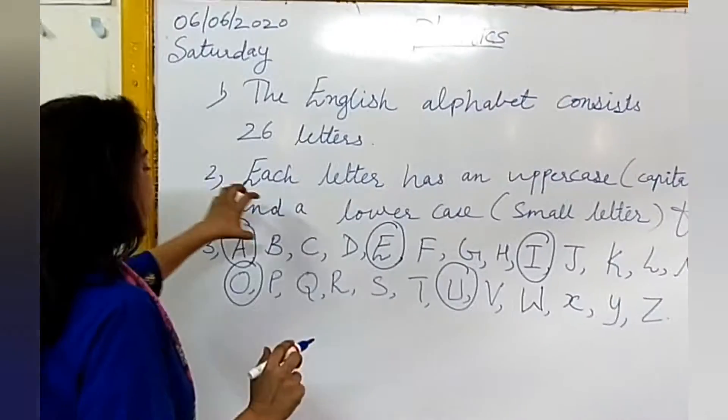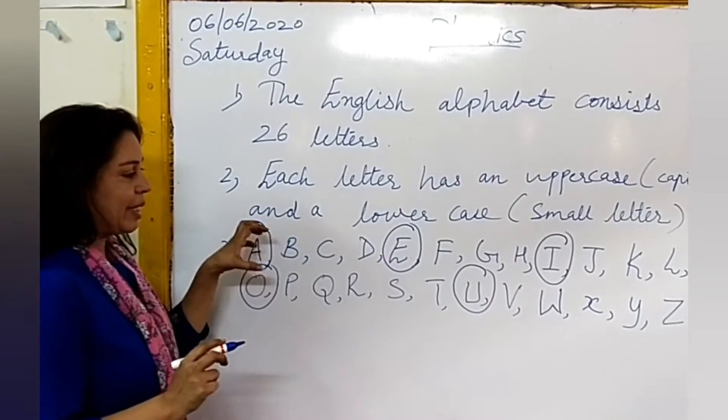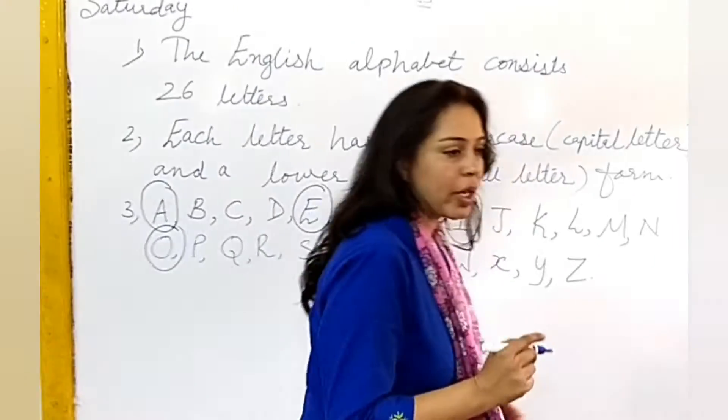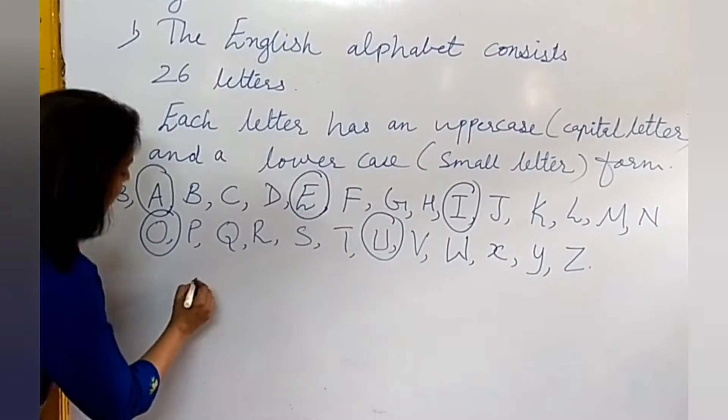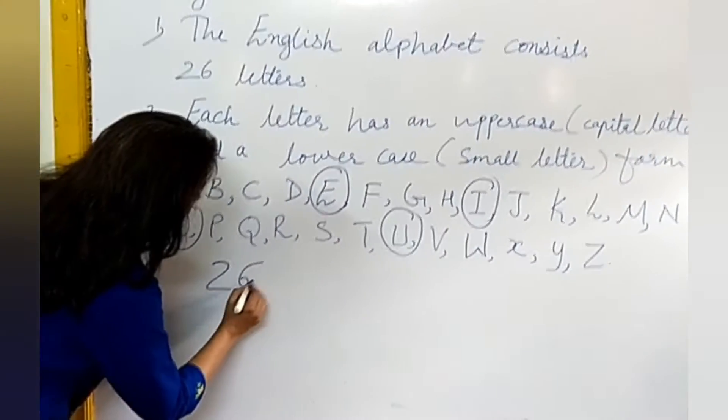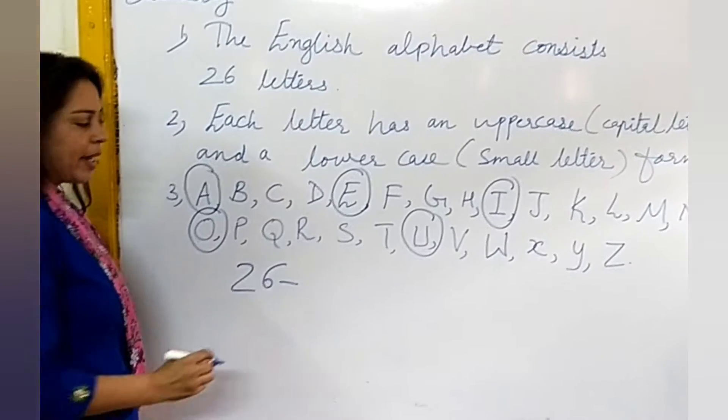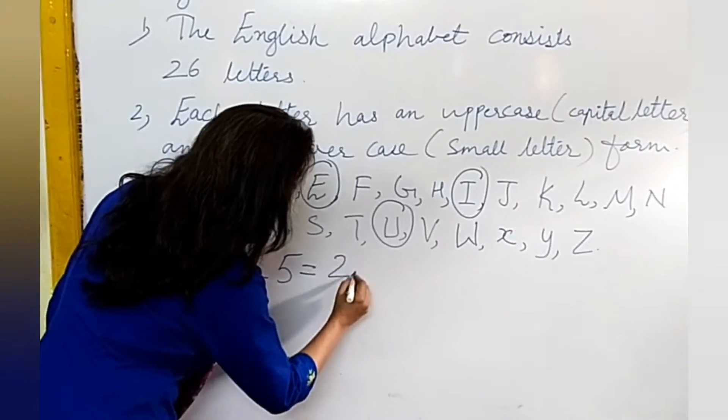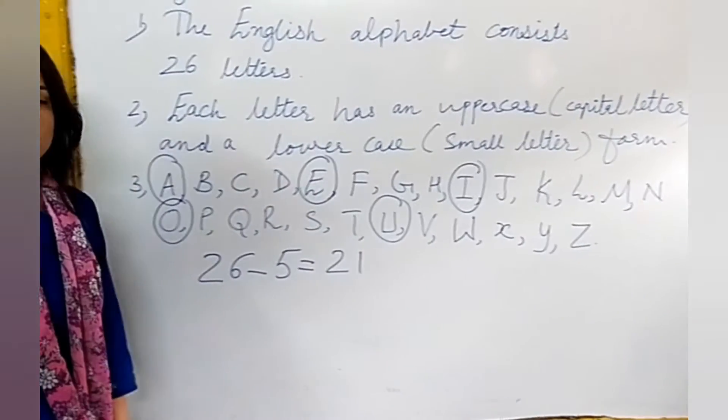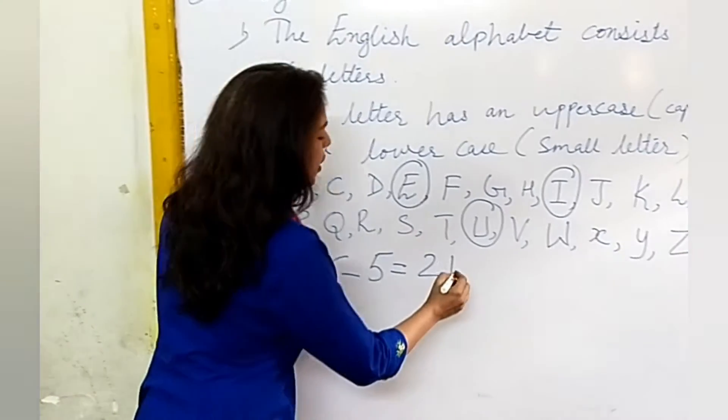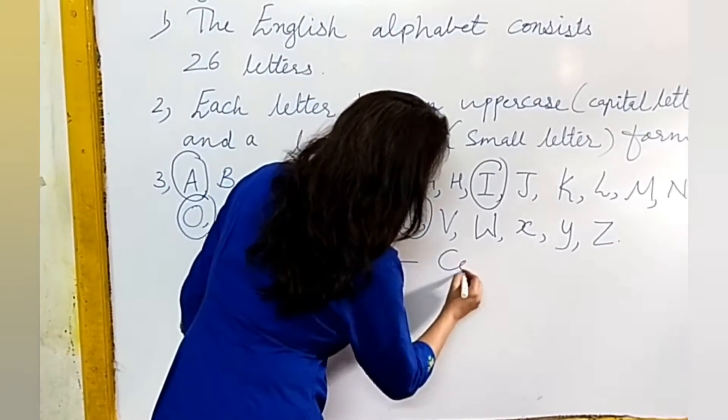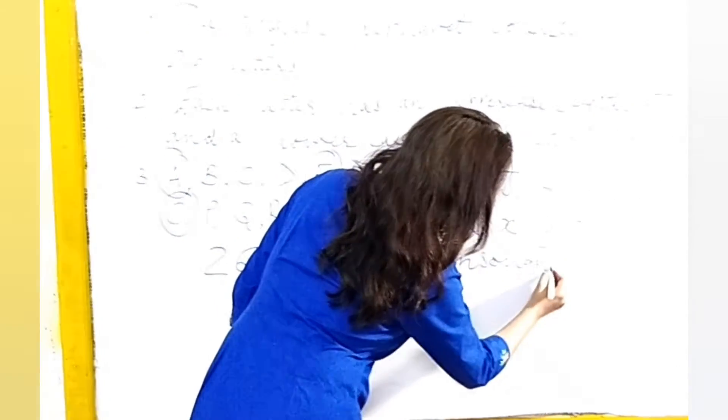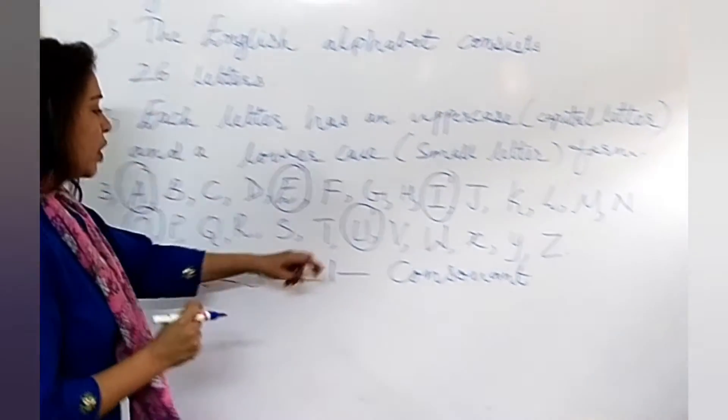Now, the rest of the letters we call consonants. 26 letters in the alphabet, right? 5 are vowels. Now, the rest is 21. These 21 are called consonants. Yes, very good. Now, these sounds.